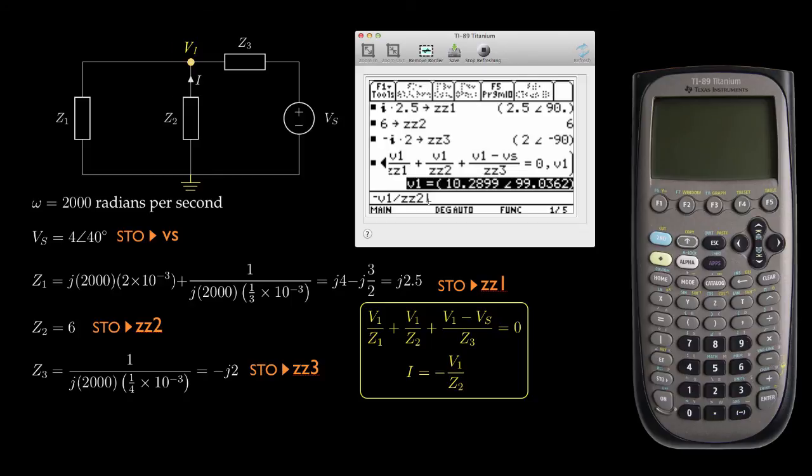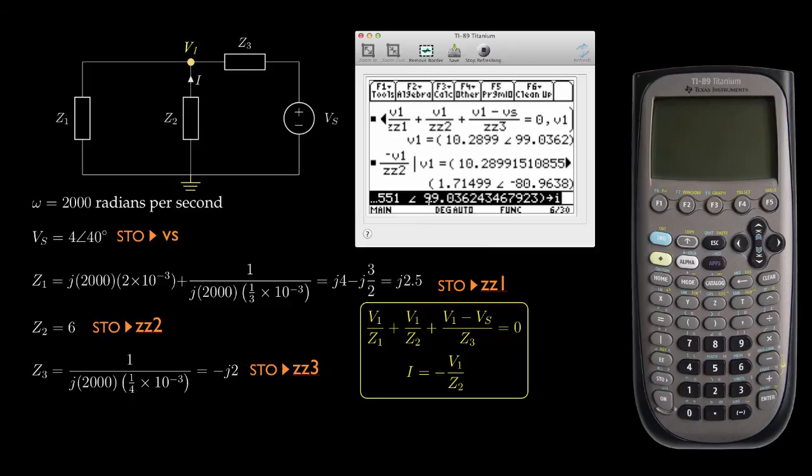So let me go up there. If I select that, press the enter button. Now we'll have V1 on that line. So when I compute that result, I'd like to then store the answer into a variable I'm going to call I. Now, if I didn't make a mistake, we'll hit return and we should see the result. So there we go. Now we've taken V1, negative V1 over Z2. We used the pipe and told it then what V1 was by bringing down the result of our previous expression. And the result is now I has an amplitude of 1.71499 and a phase of negative 80.9638 degrees.